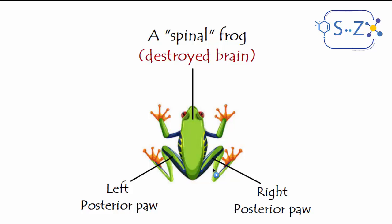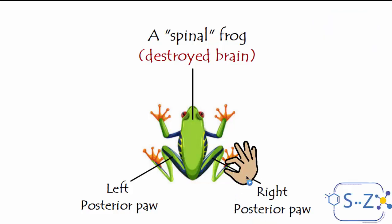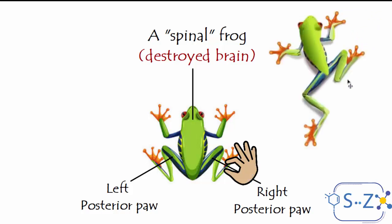These are the posterior poles and these are the anterior poles — this is the right posterior pole and the left posterior pole. The first experiment done was that they pinched the right posterior pole, which is a stimulus. What happened is that the frog flexed its right posterior pole. So the stimulus is done on the right posterior pole and the reflex or the reaction was done by the right posterior pole as well.